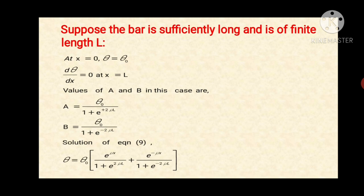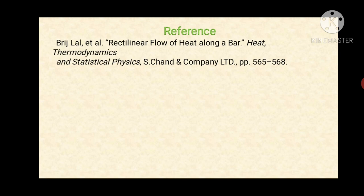Now suppose the bar is sufficiently long but of finite length L. At x=0, θ = θ₀, and dθ/dx = 0 at x = L. The values of A and B in this case are: A = θ₀ / (1 + e^(+2μL)) and B = θ₀ / (1 + e^(−2μL)). The solution of equation nine is θ = θ₀ · [e^(μx) / (1 + e^(2μL)) + e^(−μx) / (1 + e^(−2μL))]. This is the reference I have used for preparation of this PowerPoint presentation. Thank you.